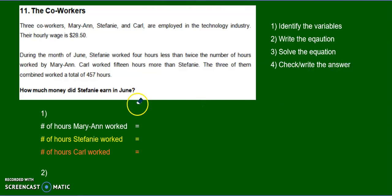So let's look over here. Which one is going to be the x? So if I read this, it tells me something about Stephanie worked how many hours. It tells me something about how many hours Carl worked. It doesn't say anything about Marianne. So I think she should be the x.